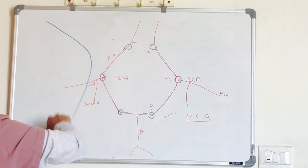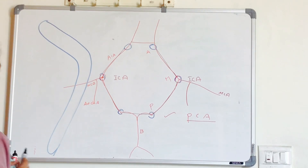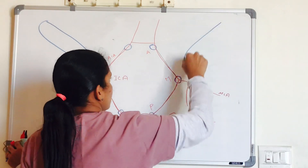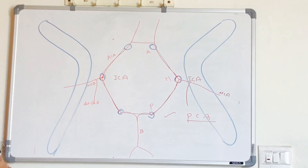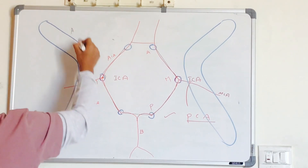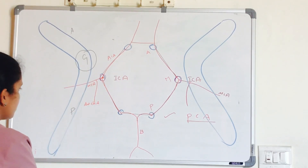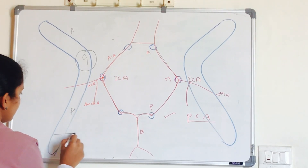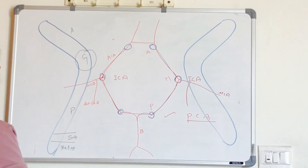Now let's move on to the blood supply of the internal capsule. The internal capsule is present on either side — both on the right and the left side. The parts of the internal capsule are: the anterior limb, the genu connecting the two limbs, the posterior limb, the sublentiform part below the lentiform nucleus, and the retrolentiform part behind the lentiform nucleus.